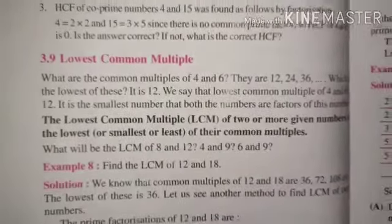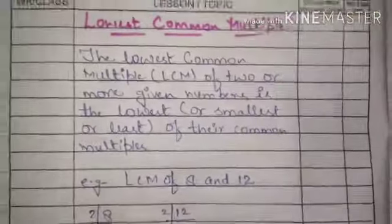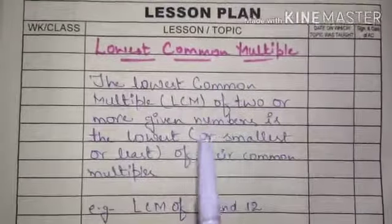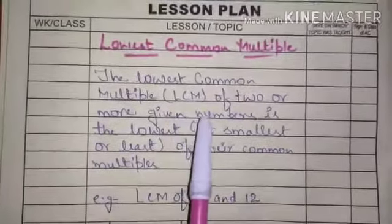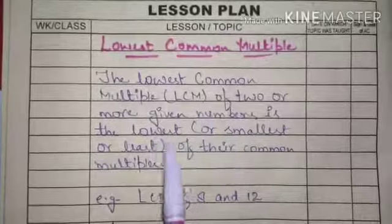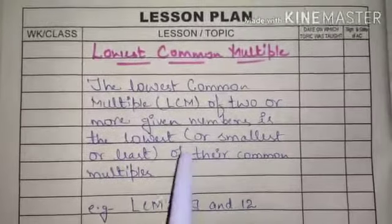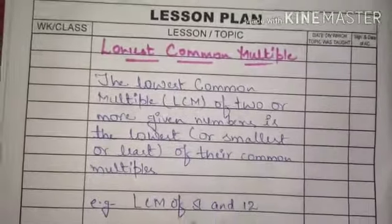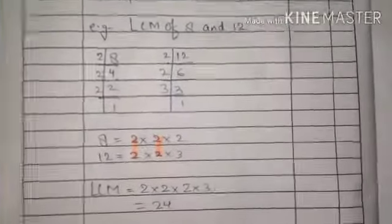The LCM of 8 and 12. We find out that LCM of 8 and 12. The lowest common multiple of 2 and more given numbers is the lowest or smallest or least of their common multiples. The LCM of 8 and 12.